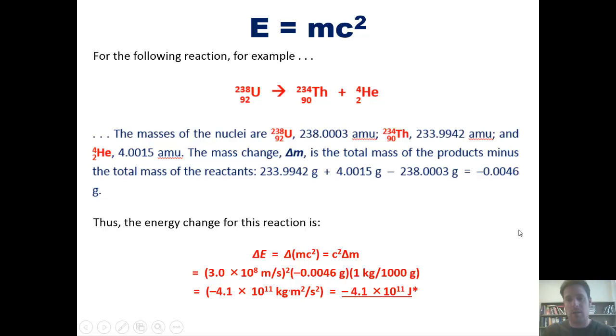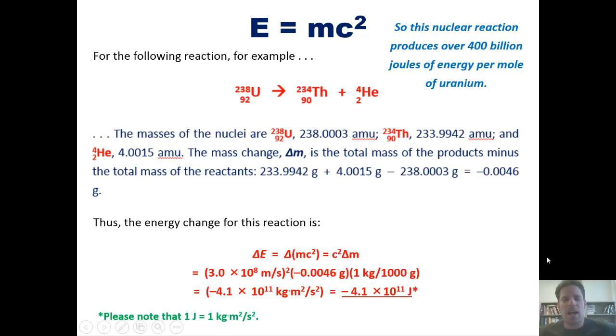Now please note that kilogram meter squared per second squared is the same thing as a joule. So this number is actually negative 4.1 times 10 to the 11th joules. We can see then that this nuclear reaction produces over 400 billion joules of energy per one mole of uranium. Is that a lot more than combusting methane gas? Oh yeah.